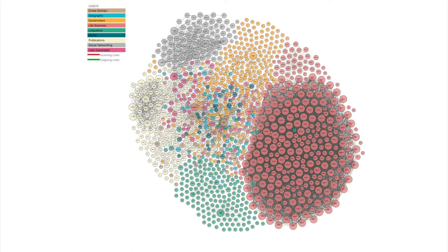Another interesting group is governmental datasets — e-government — shown in yellow at the top. These are governments opening their data and showing their citizens, for instance, overviews about governmental spending. This is also where nice applications lie for data journalists, who can analyze government spending and keep the government in check.